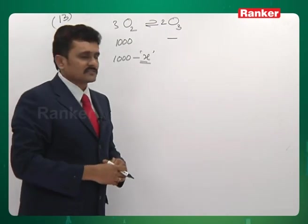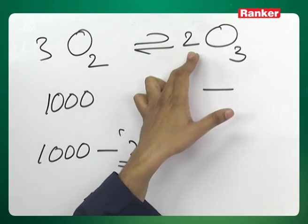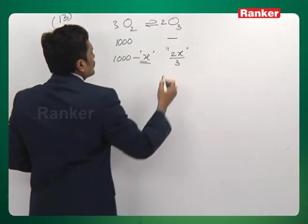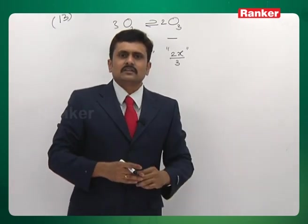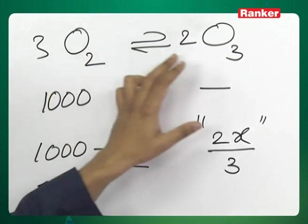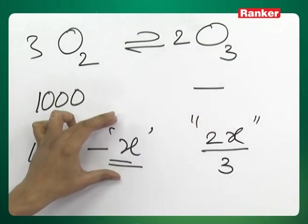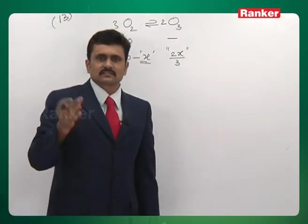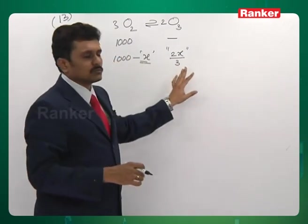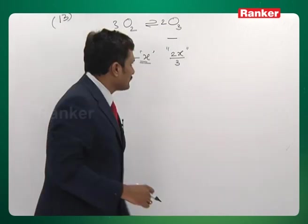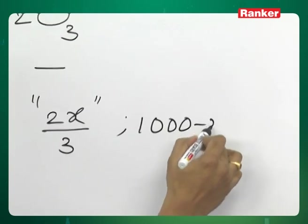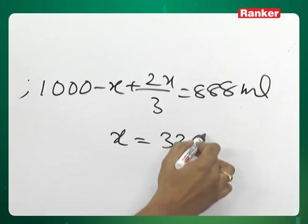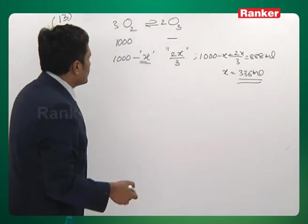For every 3 moles of O₂, 2 moles of ozone are produced; for every x ml reacted, 2x/3 ml of ozone is formed. Since both oxygen and ozone remain after the reaction, their sum equals 888 ml: (1000 − x) + 2x/3 = 888. From this, x = 336 ml of oxygen has reacted after simplification.